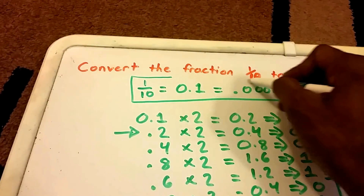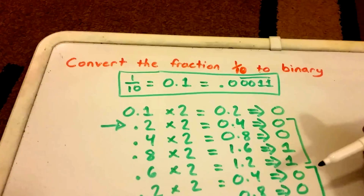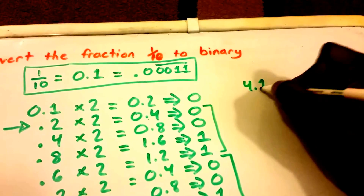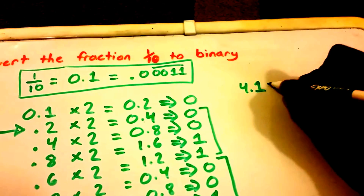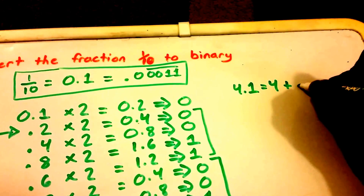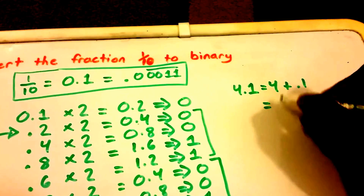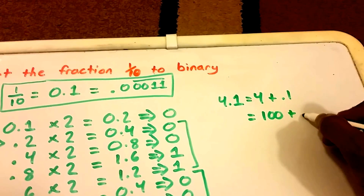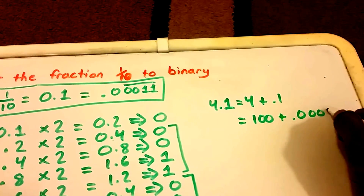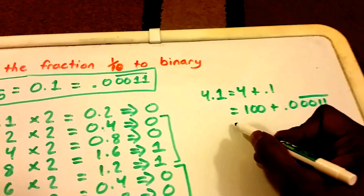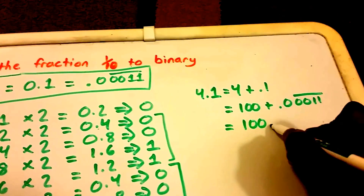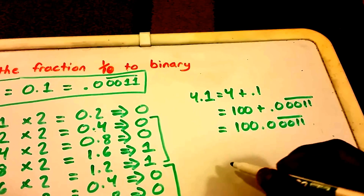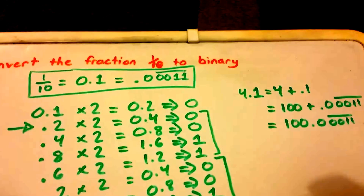Now if you're wondering what something like 4.1 would be in binary: 4.1 equals 4 plus 0.1. The number 4 in binary is 100, and 0.1 in binary we just solved is 0.000011 repeating. So the answer is 100.000011 repeating.